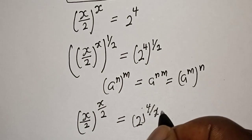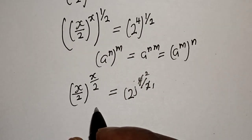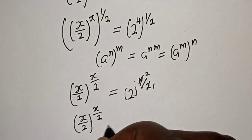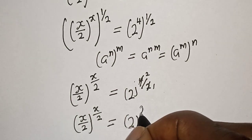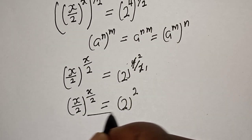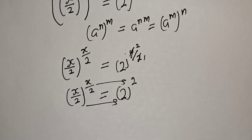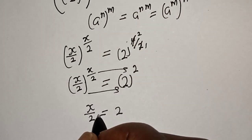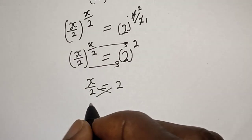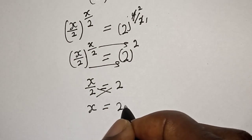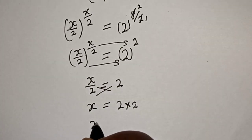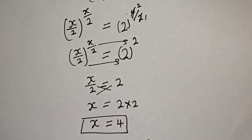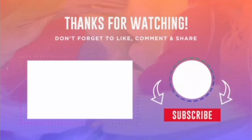So we have s over 2 raised to power s over 2 is equal to 2 raised to power 2. By comparing both sides, the base s over 2 equals 2 and the exponent s over 2 equals 2. Therefore, s over 2 is equal to 2. Cross multiplying, s is equal to 4. That is our final answer. If you enjoyed the class, please don't forget to like, share, comment and subscribe.